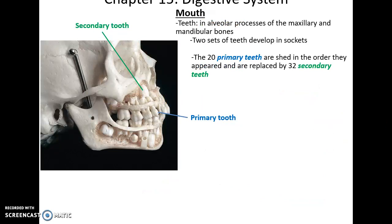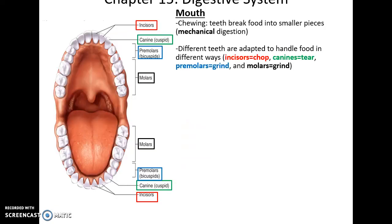Teeth are found in the mouth and are very important. They are held within the maxillary bones or the mandibular bone. We develop two sets of teeth in our lifetime: 20 primary teeth that are shed as we get older, giving us 32 secondary teeth. Teeth are important for mechanical digestion. We have four incisors, two canines, four premolars, and six molars on the top; similarly on the bottom.